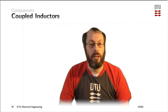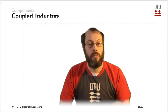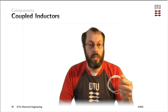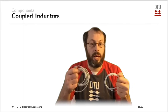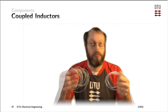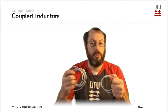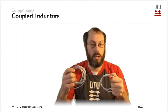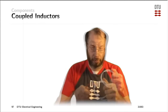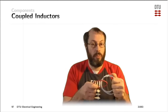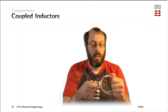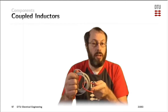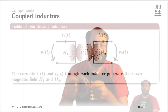What would happen if we would not have one of those windings, but actually two of them? Each of those two would generate their own magnetic field, represented here for the one winding, and represented here for the other winding.